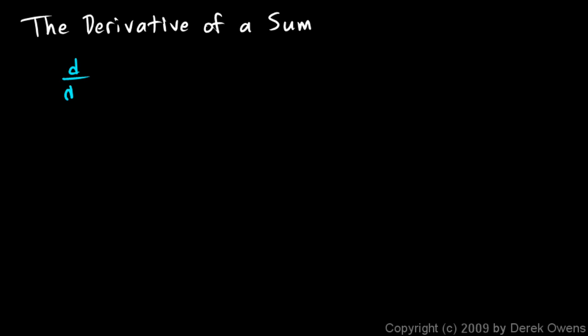By the derivative of a sum, we mean the sum of two functions — if you're taking the derivative, that's something you're doing to a function. So the derivative of a sum means: the derivative with respect to x of f of x plus g of x — two functions added together. How do we take the derivative of that? Well, I'm going to apply our definition of derivative to this, and we'll get a general answer that will strike you as fairly intuitive.